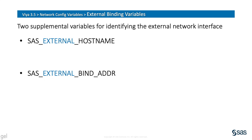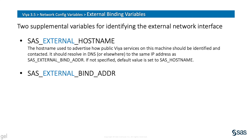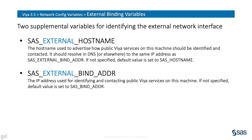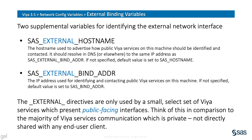The first two supplementary variables to consider are the external equivalents for hostname and bind addr. SAS_EXTERNAL_HOSTNAME has the same job as the primary SAS_HOSTNAME variable, but is specific only to the client-facing public Viya interfaces. If you don't specify a value for external hostname, then it defaults to the value of SAS_HOSTNAME. The same concept holds for the external bind addr — it should specify the network interface for public Viya services to listen on, but if it's not specified it defaults to the value of the primary variable SAS_BIND_ADDR. Remember, the external variables only apply to network communication for a small set of Viya services which present public interfaces.